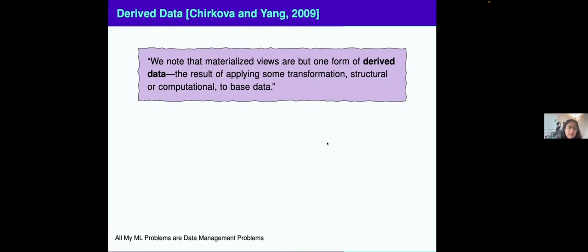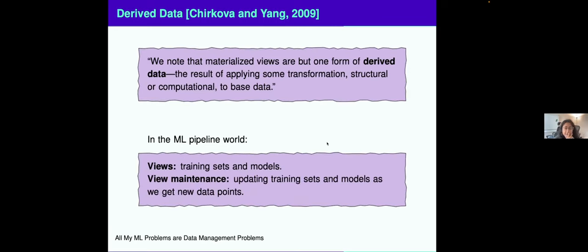How does this apply to ML pipeline land? Materialized views in literature really are just some form of derived data. Same thing with ML pipelines. When I issue a query to an ML pipeline, that prediction is some result of transformations of the data. In the ML pipeline world, we can think of views as the training sets and the models that we are creating. The idea of view maintenance, which is maintaining these views, is this DAG that we're building to update the training sets and models as we get new data points.